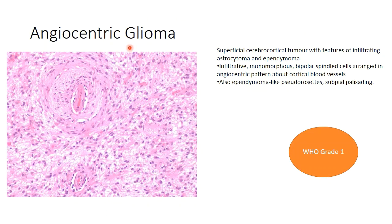Angiocentric glioma is another pediatric diffuse low-grade glioma occurring typically in the cerebrocortical location. It shows characteristic round-to-ovoid morphology with bipolar spindle cell morphology. A characteristic angiocentric pattern is noted with tumor cells surrounding typical cortical blood vessels. Sometimes pseudorosettes and sub-pial palisading can be noted. This is a characteristic WHO grade 1 tumor with the angiocentric disposition as its defining feature.